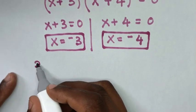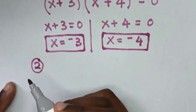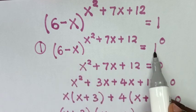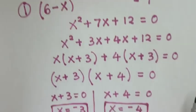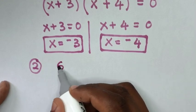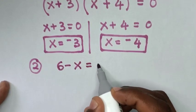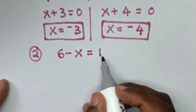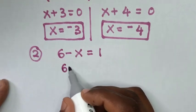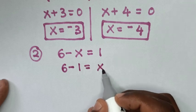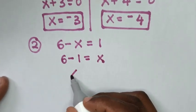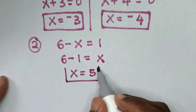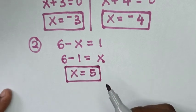Now, in the second step, we'll compare the bases. 6 minus x is equal to 1. So from 6 minus x equals 1, we take negative x to the right side and 1 to the left side, so it will be 6 minus 1 equals x. Then x is equal to 5. So this is the third value of x.